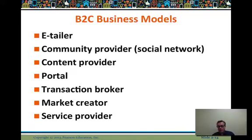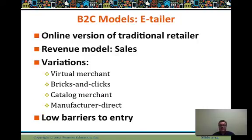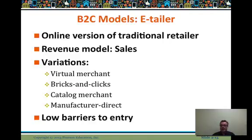Portals such as Yahoo, transaction brokers, market creators, and service providers are other B2C models. The e-tailer is probably the most traditional, with a revenue model centered on sales. It can vary between a virtual merchant — all online — or bricks and clicks. JCPenney has an online version but also many stores. Walmart, Target, all of those. A pure play like Amazon is a pure-play e-commerce virtual merchant.